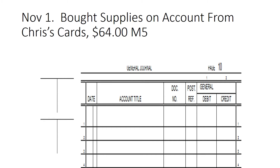Before we get into this transaction, notice the general journal has changed a little bit. It literally has no special amount columns — just a general debit and a credit. So every number we have here is going to have an account description. We bought supplies on account, so we circle our adjectives and underline our verb. The two accounts we'll use are supplies and accounts payable slash Chris's Card. The slash is new — when we post, we have to post to the accounts payable controlling ledger and to the Chris's Card accounts payable subsidiary ledger, so that one number gets posted to two different areas. That's what the slash means.